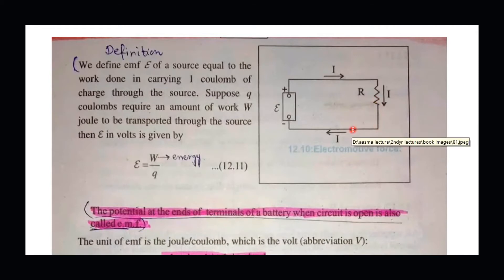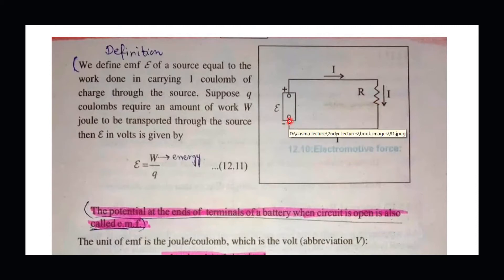The charges will move towards the negative terminal of the battery. At the negative terminal of the battery, the battery has a small internal resistance. The charges will flow through this internal resistance and the potential is low. The electromotive force will push the charges again. The energy will lift the low-potential charges. These low-potential charges will be raised to the positive terminal. The energy will continue to be supplied by the source battery.